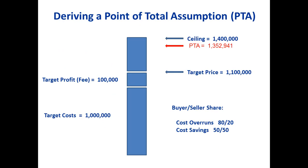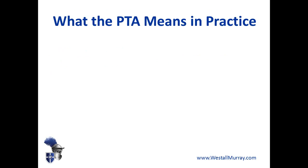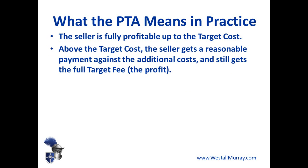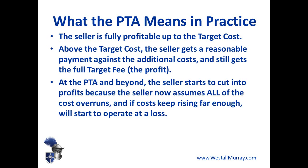The point of total assumption in this example is one million three hundred and fifty-two thousand nine hundred and forty-one dollars. What does that mean? Up to the target cost, the seller is fully profitable. Above the target cost — if costs go above a million in our example — the seller gets reasonable payment against additional costs and still receives their full target fee of one hundred thousand. However, at the point of total assumption and beyond, the seller has to pay all of the cost overruns and therefore starts to cut into their profits. If costs keep rising far enough, they'll start to operate at a loss.